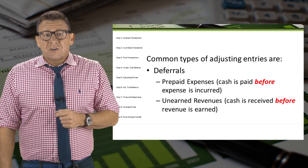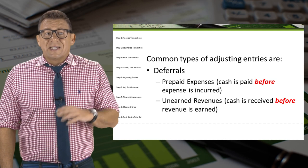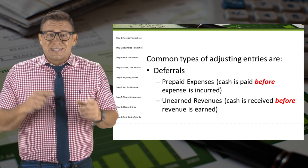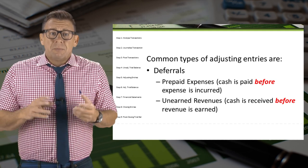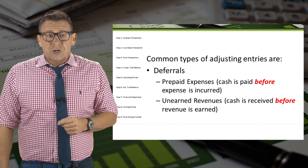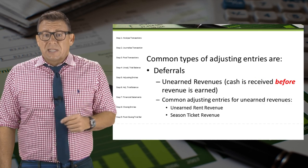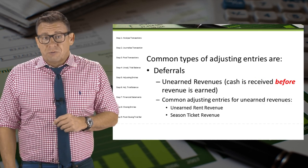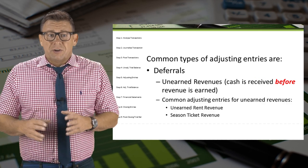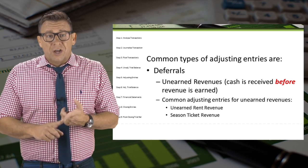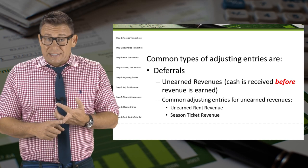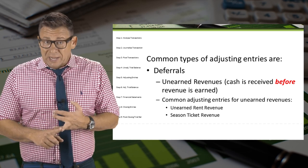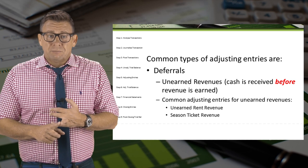Another type of deferral is unearned revenue. This means that cash is received before revenue is earned. Some common examples of adjusting entries for unearned revenues are unearned rent revenue, season ticket revenue, and airline ticket revenue.